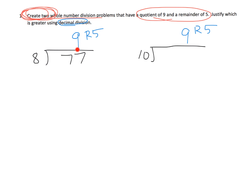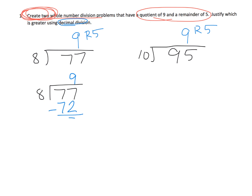Parents and teachers, you may need to pause this video and let your students work that out to make sure it's correct. Now we have two problems, both with the same answer of nine remainder five, but we want to figure out which answer is actually larger. So we're going to use decimal division. For seventy-seven divided by eight: seventy-seven ones divided amongst eight groups gives nine in each group, subtract to get five remaining.